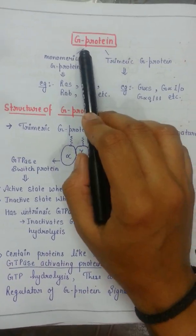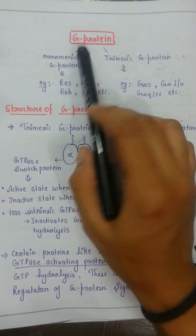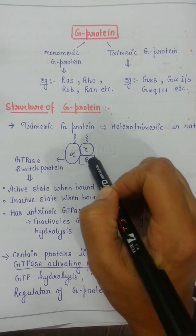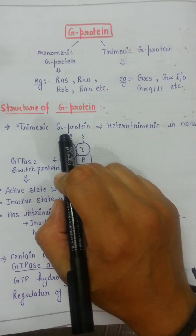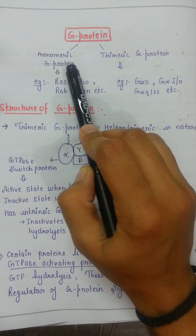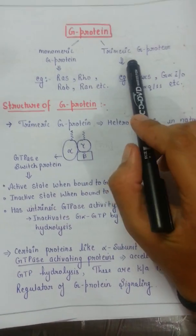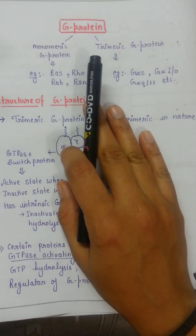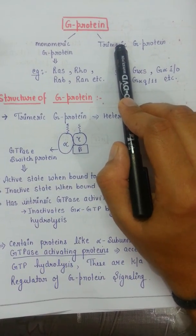So a G-protein is a guanine nucleotide binding protein and it has three subunits. Before discussing that, we should know there are two kinds of G-proteins: the first is the monomeric G-protein and the second is the trimeric G-protein.